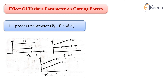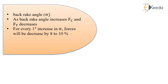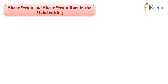Regarding rake angle: as rake angle increases, line contact is slightly converted to point contact, so forces decrease. For every one degree increase in rake angle alpha, there is a decrease in forces by 8 to 10 percent. Also, using cutting fluids in metal cutting reduces cutting forces by 25 to 20 percent. This is enough for this video; we will continue in the next video. Thank you.